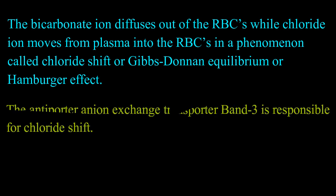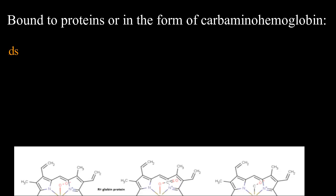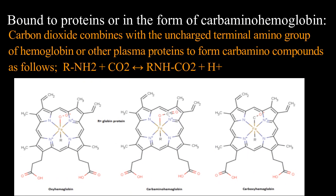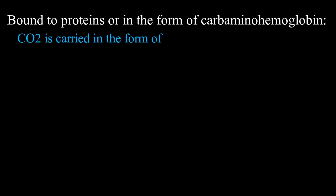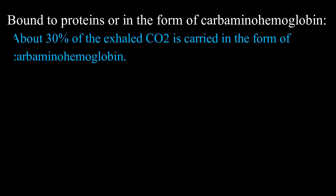The antiporter anion exchange transporter, that is band 3, is involved in the chloride shift. Third, in the bound form to proteins, or in the form of carbaminohemoglobin. Carbon dioxide combines with the uncharged terminal amino group of hemoglobin or other plasma proteins to form carbaminocompounds: R-NH2 plus CO2 gives carbaminocompounds plus protons. About 30% of the exhaled carbon dioxide is carried in the form of carbaminohemoglobin.